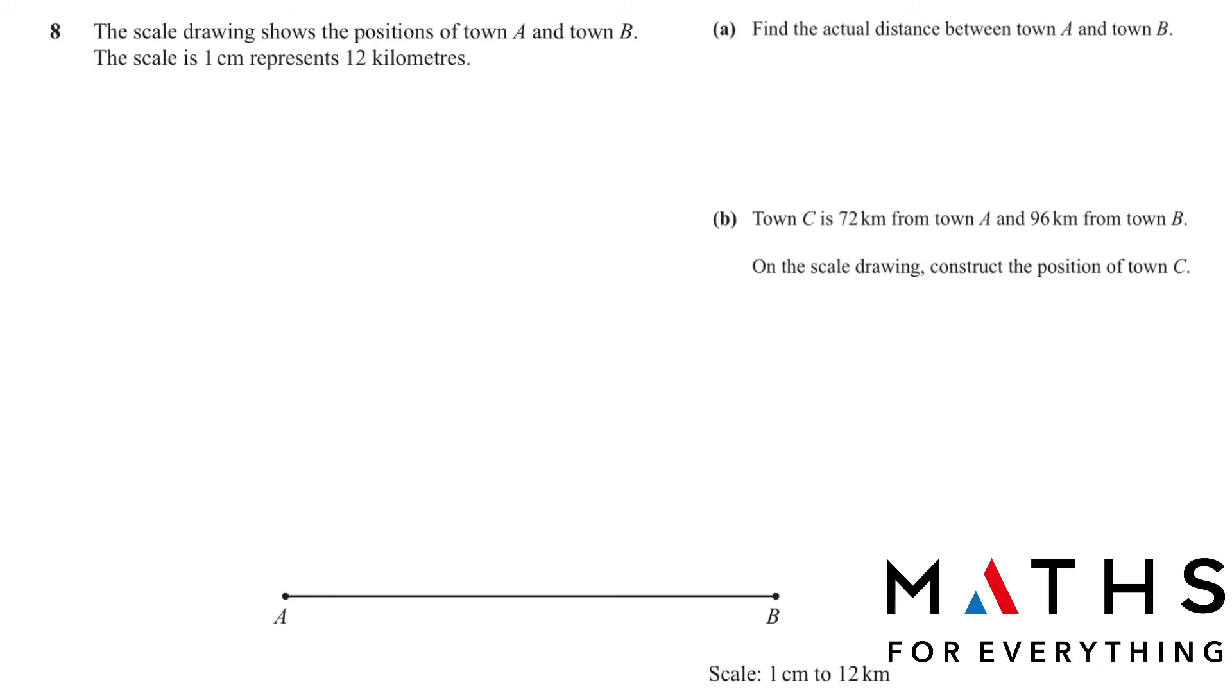Question number 8. The scale drawing shows the positions of town A and town B. The scale is 1 centimeter represents 12 kilometers. A. Find the actual distance between town A and town B. A very easy question. We have to measure from A to B. And we will get 9 centimeters. And then for the actual distance we multiply the centimeter that we got by 12. 9 multiplied by 12 will give us 108 kilometers.